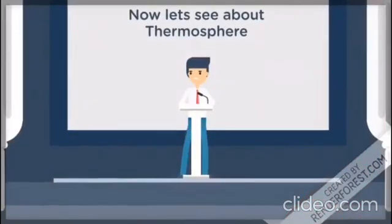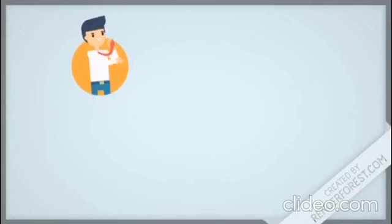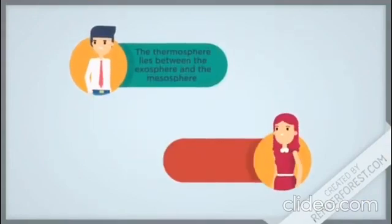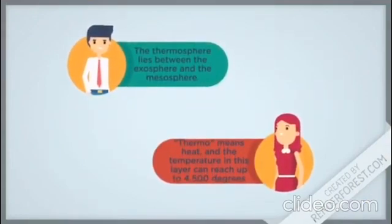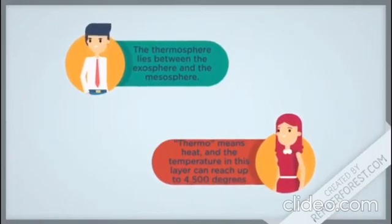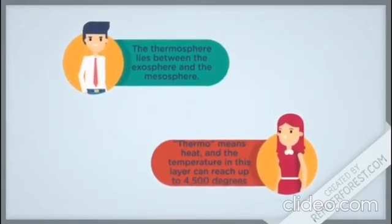Now let's see about the thermosphere. The thermosphere lies between the exosphere and the mesosphere. Thermal means heat and the temperature in this layer can reach up to 4500 degrees.